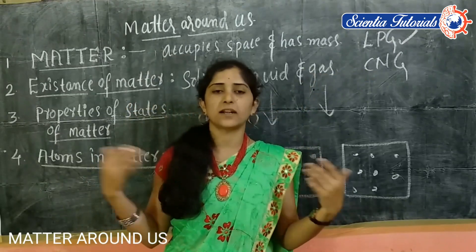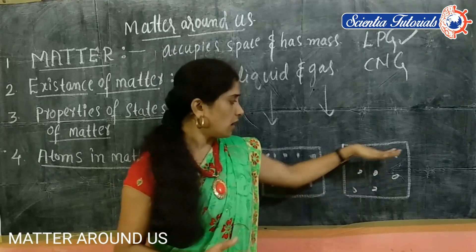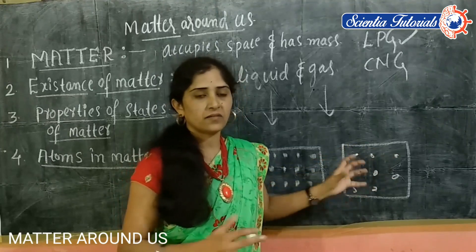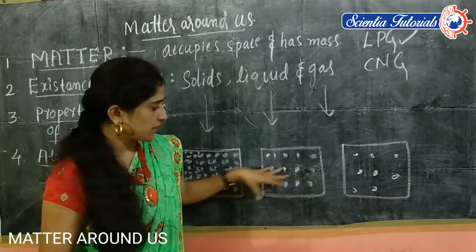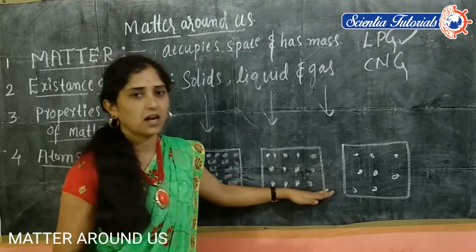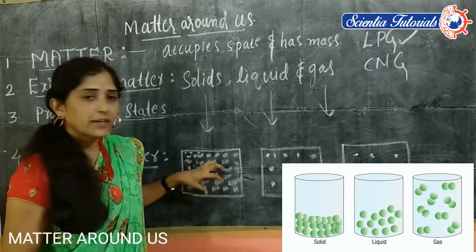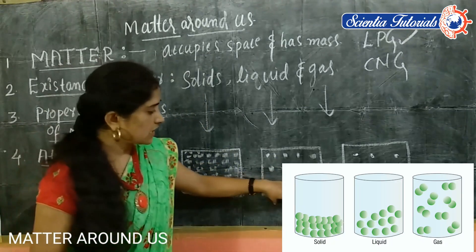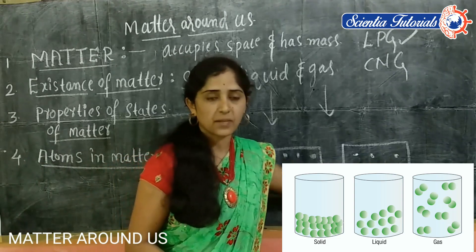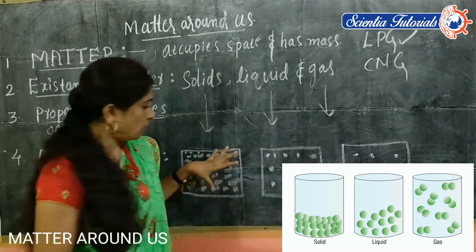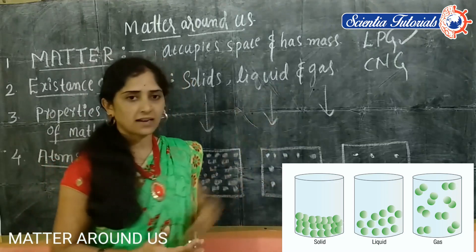Gases neither have shape nor a particular volume. Regarding the alignment of atoms in the gaseous state, atoms will arrange with a lot of space in between them. In the liquid state, there is a certain gap between the atoms. When we come to the solid state, there is no gap in between the atoms. In the liquid state, there is some gap. In the gaseous state, there is a lot of gap in between the atoms. Due to this arrangement of atoms, the properties of the different states of matter also vary.